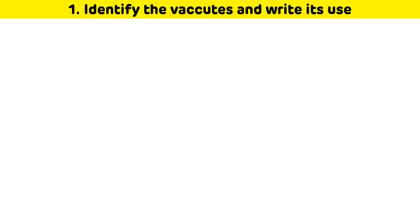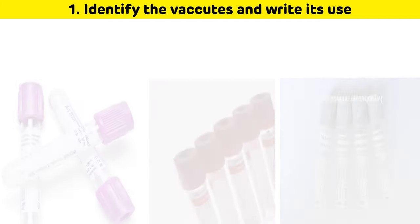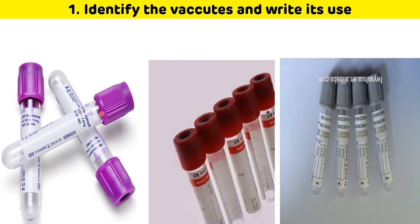First question: identify the vacutainers and write their uses. The first vacutainer is the K3 EDTA tube, which is used for the estimation of CBC and glycated hemoglobin, that is HbA1c. The second is the green vacutainer, which is used for the estimation of various biochemical parameters like RFT, LFT, electrolytes, hormones, and in serology testing.